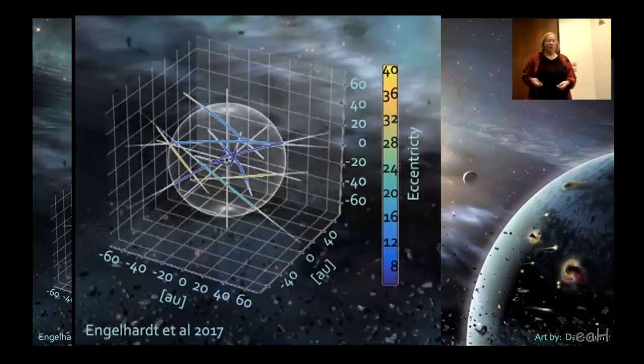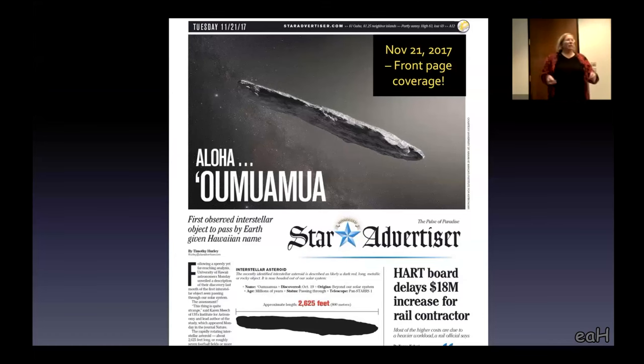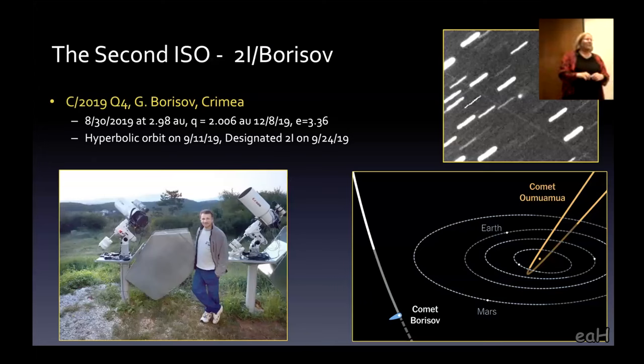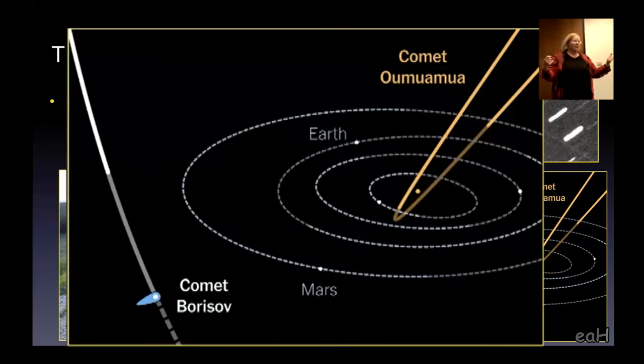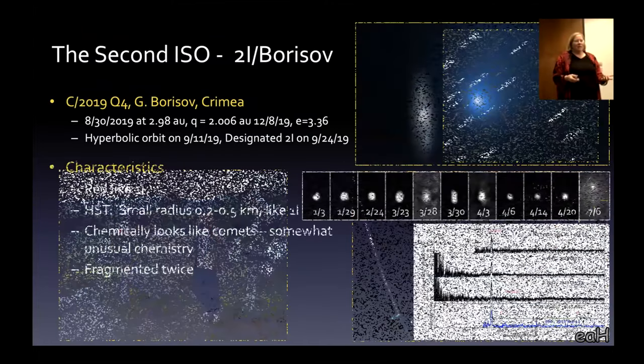It was really exciting for everybody and it actually made the front page of Hawaii's newspapers, Aloha 'Oumuamua. There was a second one discovered two years later. This one was discovered by an amateur astronomer, Borisov with his homemade telescopes. He was looking really close to the horizon in twilight. That's the discovery image. It actually looks like a comet. It's got a tail. Borisov never came very close to the sun. That one we could study for two years.